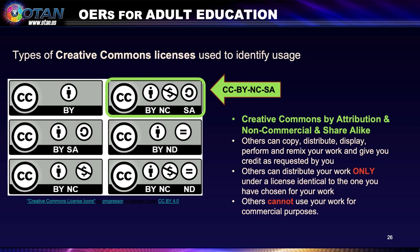The next license is CC BY NCSA — Creative Commons by attribution, non-commercial, and share alike. Others can copy, distribute, display, perform, and remix your work and give you credit. Others can distribute your work only under a license identical to the one you have chosen — that's the share alike — and others cannot use your work for commercial purposes, indicated by the icon with a dollar sign and a slash through it.